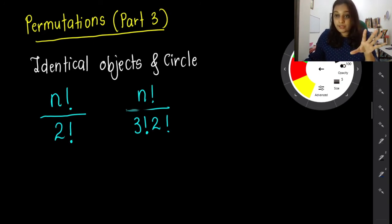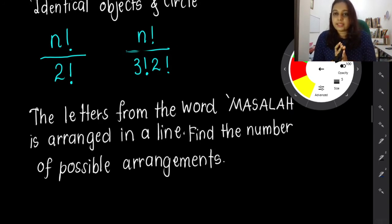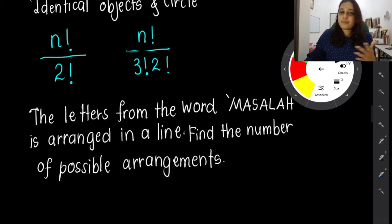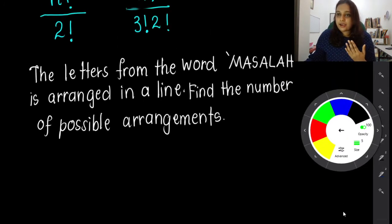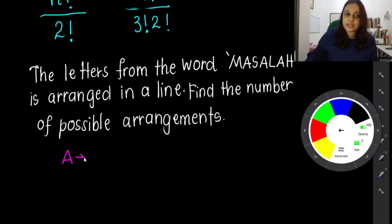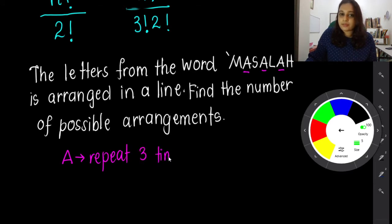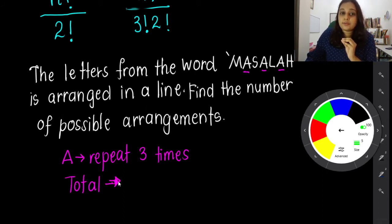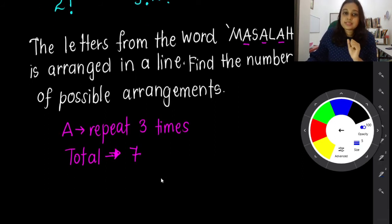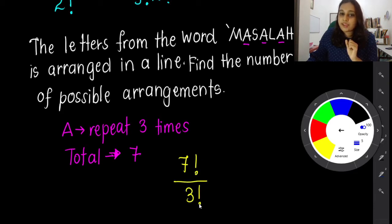Here's the example: the letters from the word MASALA (this is a Malay word) are arranged in a line. Find the number of possible arrangements. Look carefully at the word MASALA - which letters are repeating? The letter A is repeating three times. The other letters M, S, and L each appear once. Total letters: one, two, three, four, five, six, seven - seven letters total.